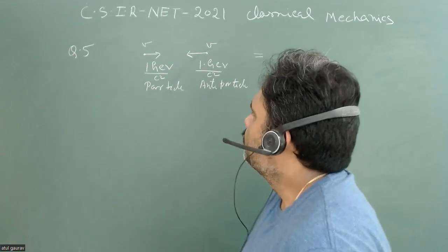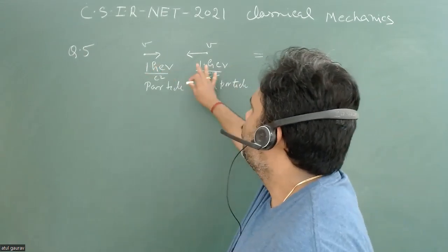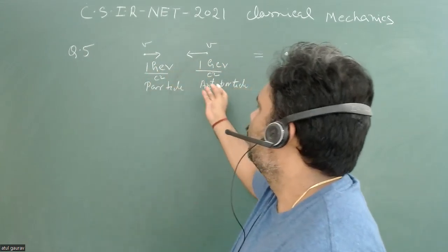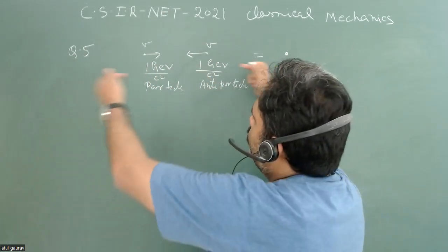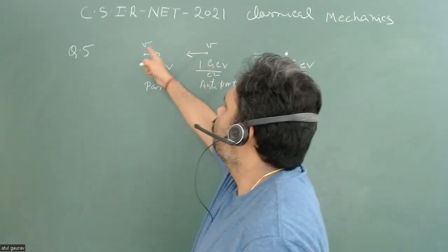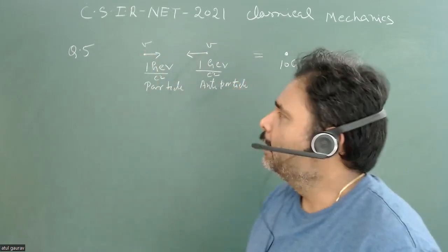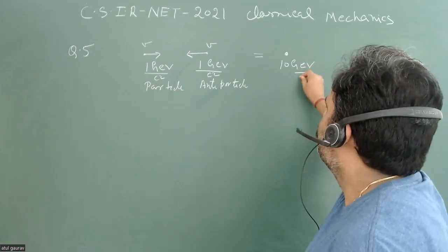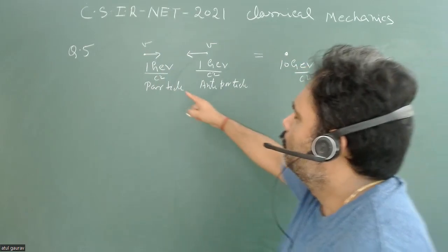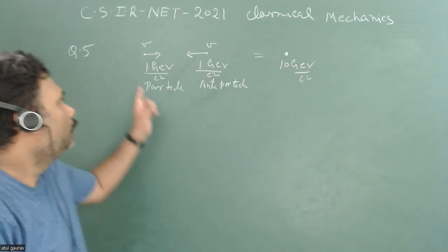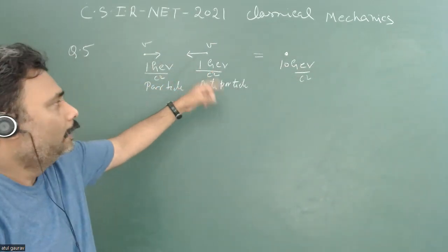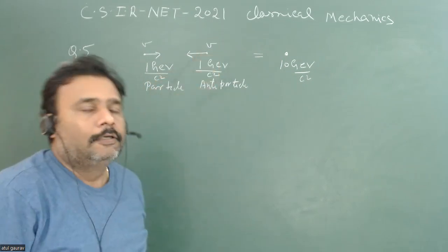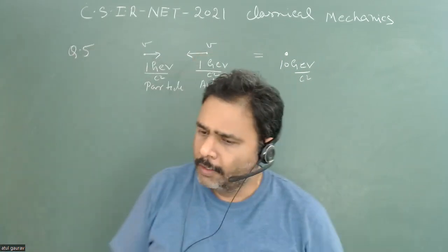It is given that a particle and its antiparticle both have the same mass. The antiparticle has the same mass but moves in the opposite direction with some velocity v. After collision they combine and make a composite mass of 10 GeV/c². The particle and antiparticle each have mass 1 GeV/c², and the composite particle has mass 10 GeV/c². We need to find the value of v.